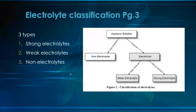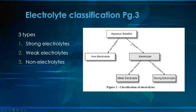We classify electrolytes starting with an aqueous solution — something dissolved in water. From there it's either a non-electrolyte, meaning it does not conduct, or an electrolyte, meaning it does conduct. Electrolytes are further classified as either a weak electrolyte, characterized by weak conductivity, or a strong electrolyte, characterized by strong conductivity. So we're looking at three major classifications: strong, weak, and non-electrolyte.